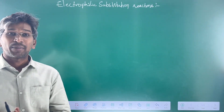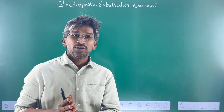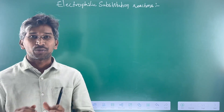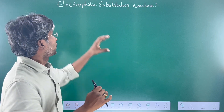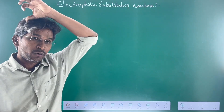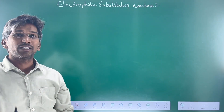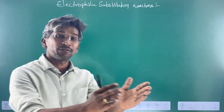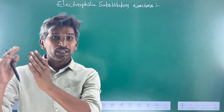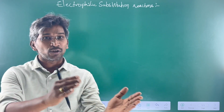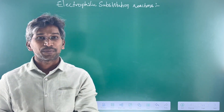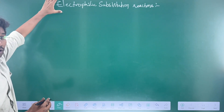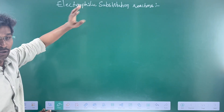Substitution reactions are mainly classified into three types: electrophilic substitution, free radical substitution, and nucleophilic substitution. In electrophilic substitution, the substitution is happening because of an electrophile — one electrophile is replaced by another electrophile. That is electrophilic substitution.